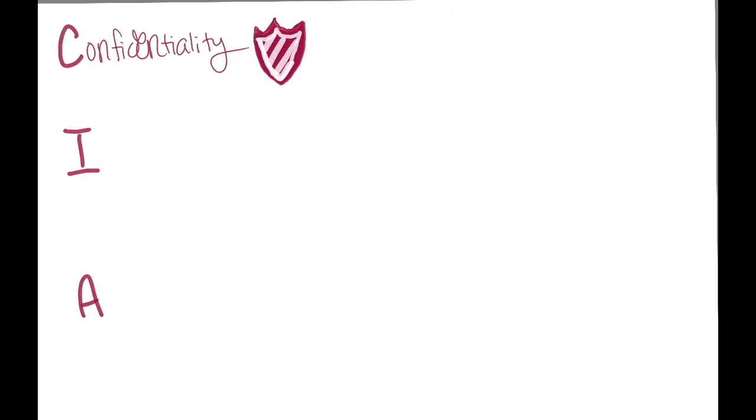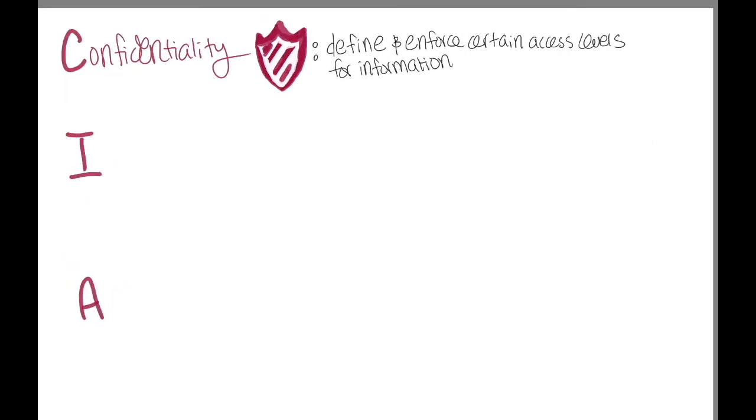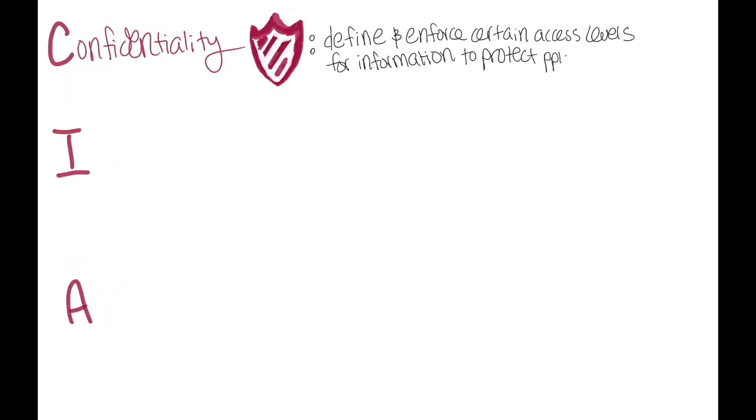confidentiality refers to the protection of people's sensitive and private information from unauthorized access. Protecting confidentiality is dependent on being able to define and enforce certain access levels for information. In some cases, doing this involves separating information into various collections that are organized by who needs access to the information and how sensitive that information actually is, such as by evaluating the amount of damage suffered if the confidentiality was breached.